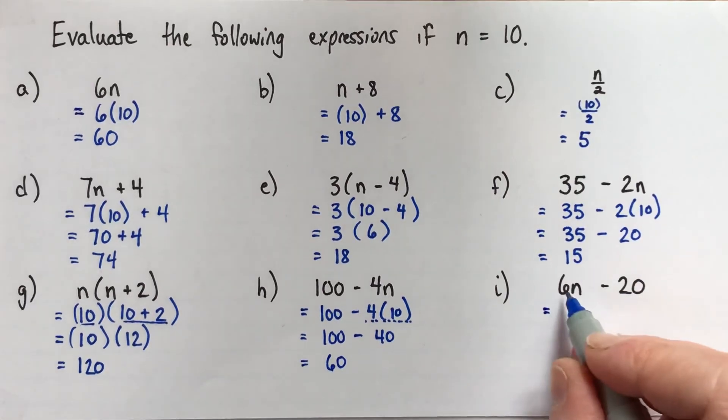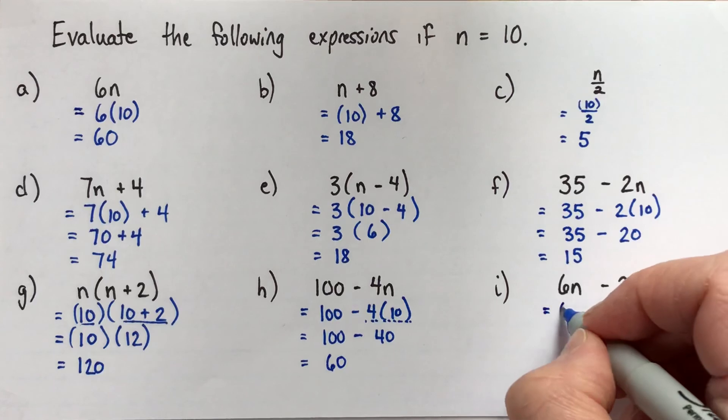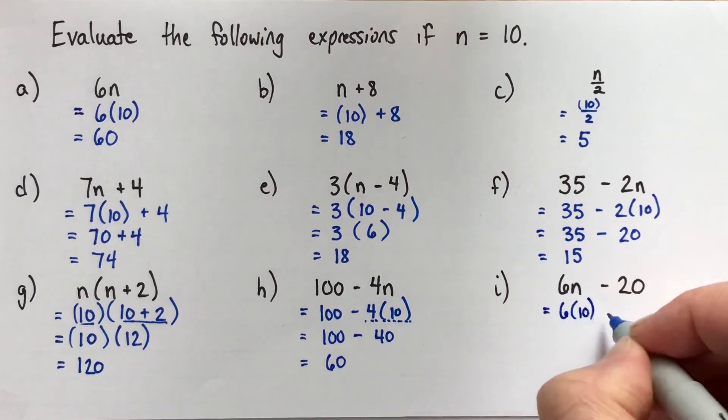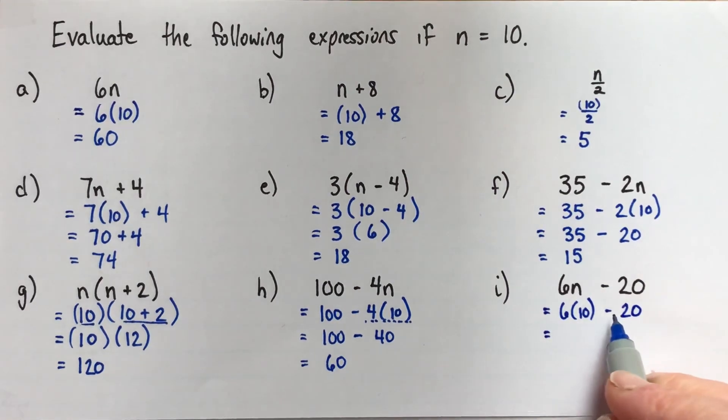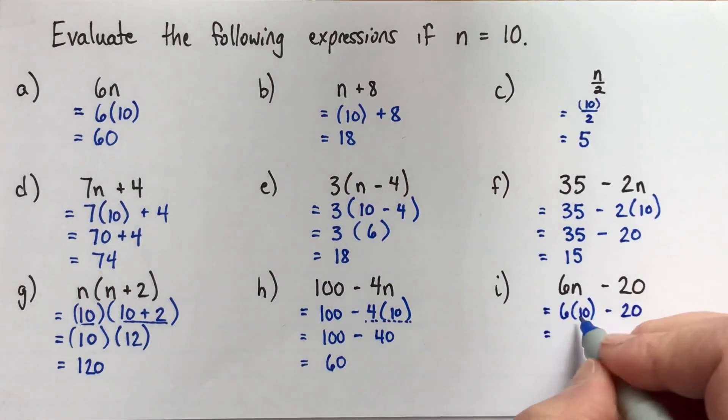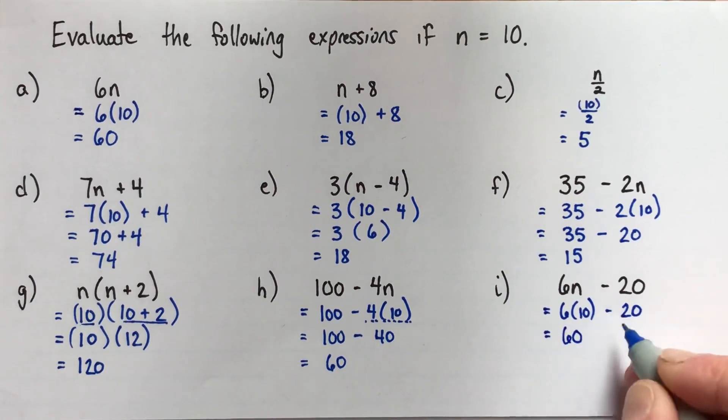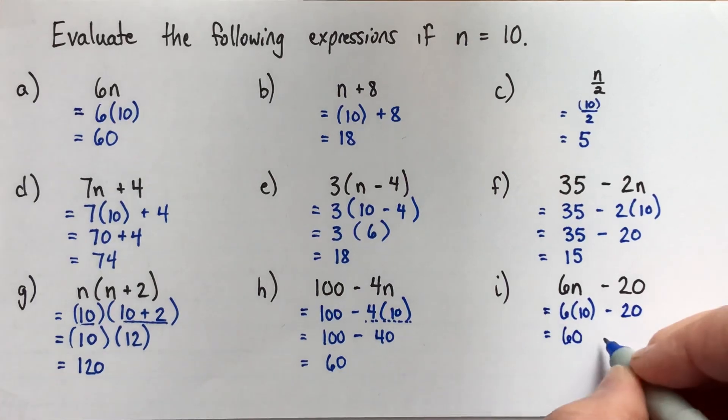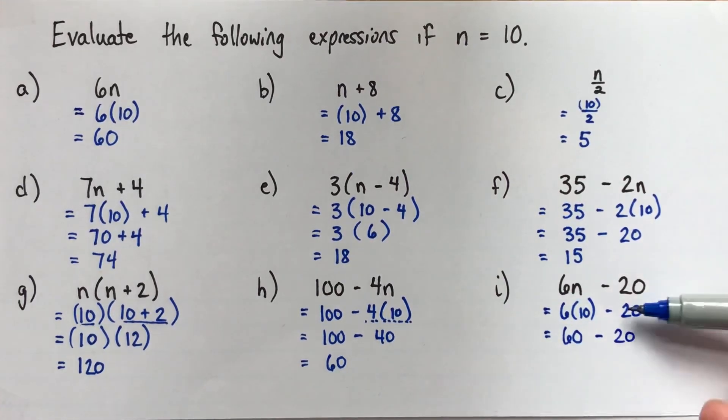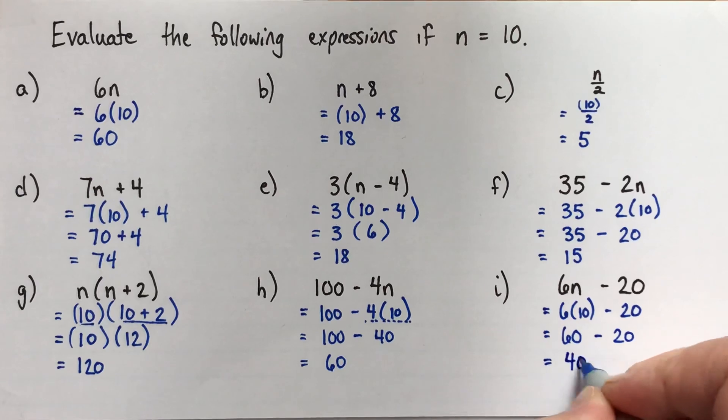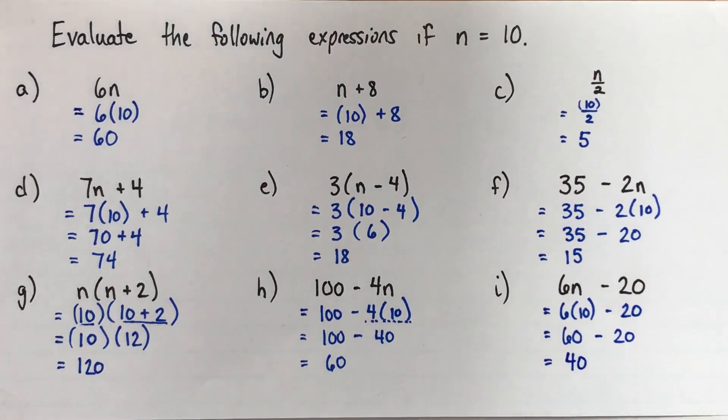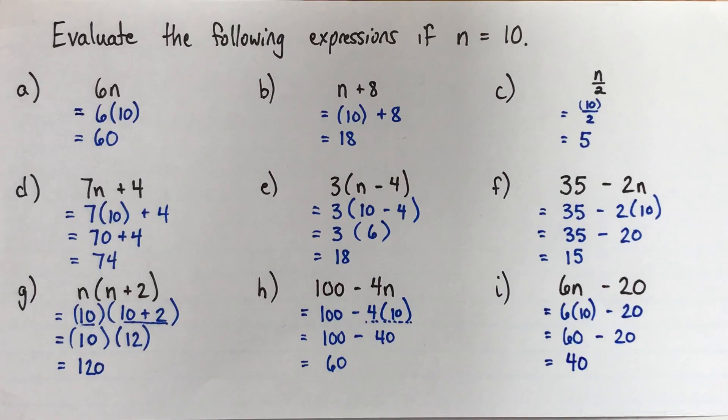Alright. So here, the last one, we've got 6n subtract 20. So I'll replace my n with 10. I have a multiplication and a subtraction, so the multiplication gets priority. 6 times 10 is 60. Sometimes people will forget, but it's really important to write that down. Subtract 20. Write that down on this line. So that each line has the same value as the line before. And then 60 subtract 20 is 40. Alright. So good luck evaluating expressions. Thank you.